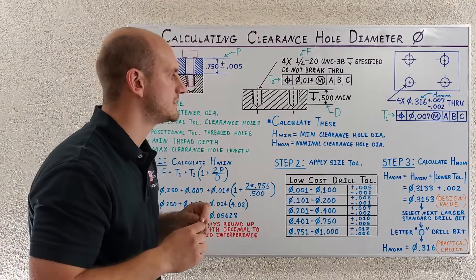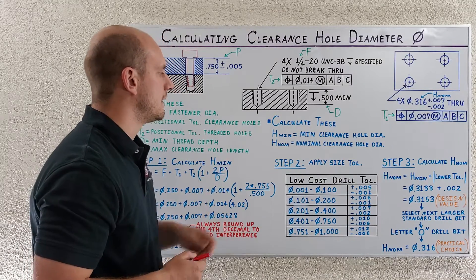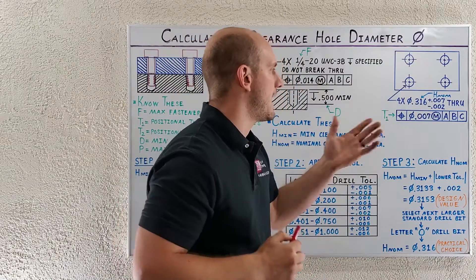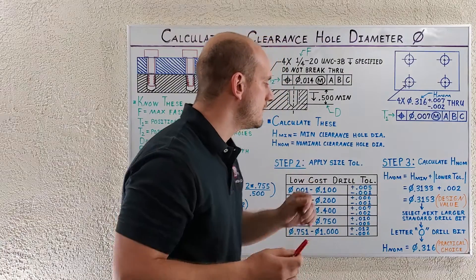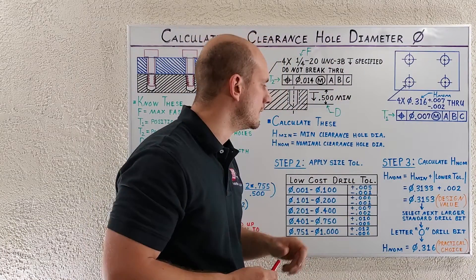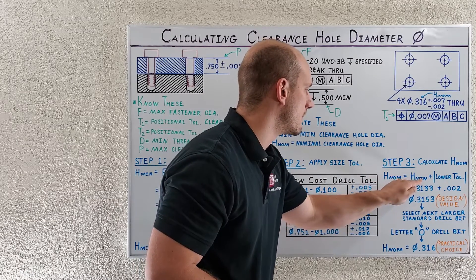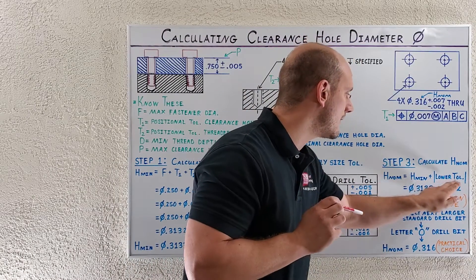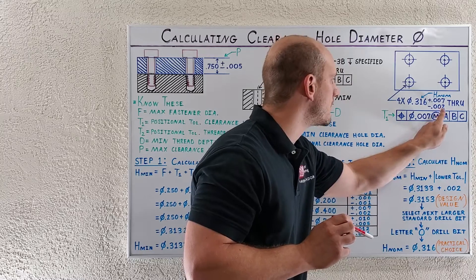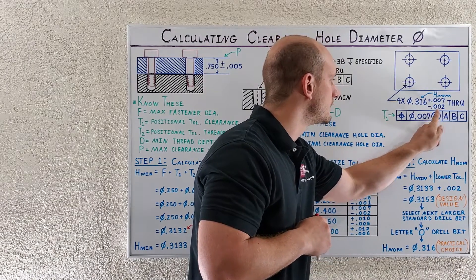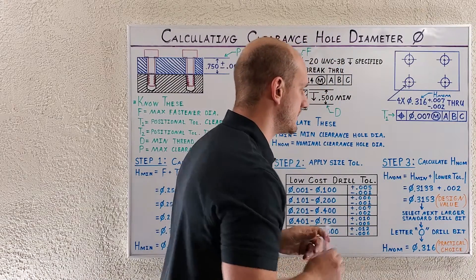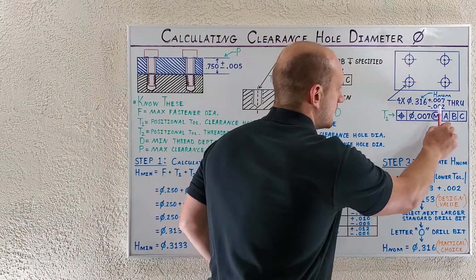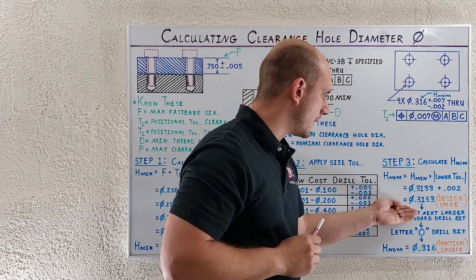Step three is to calculate our nominal clearance hole diameter — what we list as the diameter in our clearance hole call-out. The formula is: nominal clearance hole diameter equals the minimum clearance hole diameter plus the absolute value of the lower size tolerance. So that's 0.3133 plus the absolute value of negative two thousandths, giving us 0.3153.